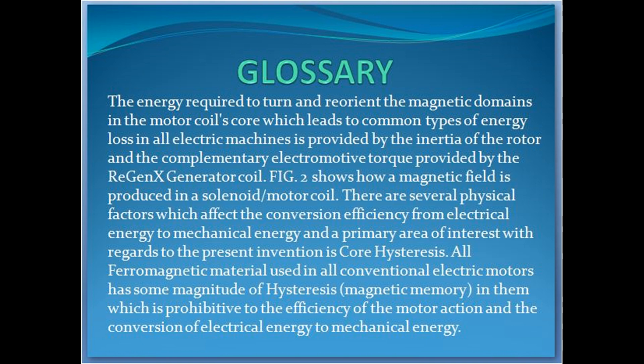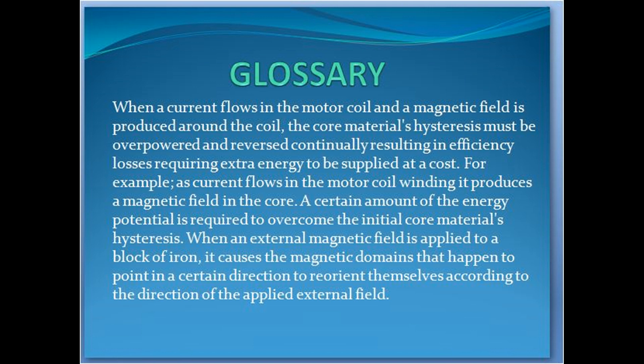FIG. 2 shows how a magnetic field is produced in a solenoid motor coil. There are several physical factors which affect the conversion efficiency from electrical energy to mechanical energy, and a primary area of interest with regards to the present invention is core hysteresis. All ferromagnetic material used in all conventional electric motors has some magnitude of hysteresis, which is prohibitive to the efficiency of the motor action and the conversion of electrical energy to mechanical energy. When a current flows in the motor coil and a magnetic field is produced around the coil, the core material's hysteresis must be overpowered and reversed continually, resulting in efficiency losses requiring extra energy to be supplied at a cost. For example, as current flows in the motor coil winding it produces a magnetic field in the core, and a certain amount of the energy potential is required to overcome the initial core material's hysteresis.